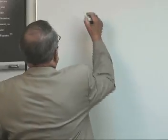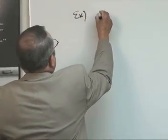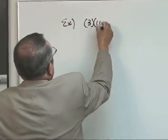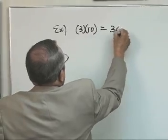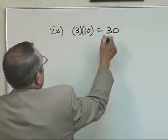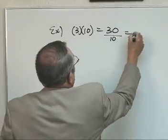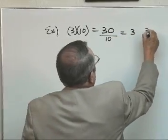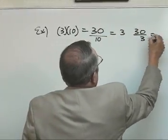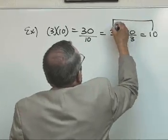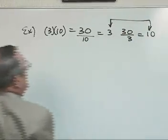Division undoes multiplication and subtraction undoes addition. Let's take an example here. Let's say you have 3 times 10 and that gets 30. That's multiplication. If we divided by 10, we'd get 3. And if we divided by 3, we'd get 10. And there's our two factors that we started with.